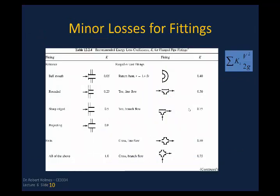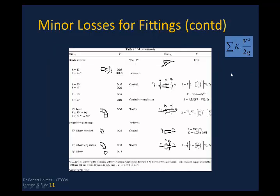For pipe fittings, valves, and things, these are some tables in your textbook. You can also look these up in design manuals. For like entrances of pipes, the bell mouth has a much smaller value of K because it allows for a gradual transition as opposed to a square-edged or a projecting pipe. Same thing with your fittings — you can see the values of K. The big thing here is the sum of those energy loss coefficients times the velocity head. Here are some more values for different types of fittings.